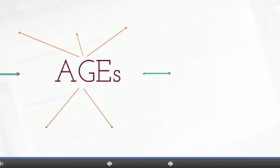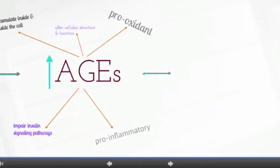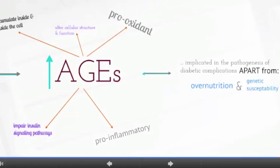Up to this point, accelerated AGE formation and accumulation in diabetes has been demonstrated to activate inflammatory and pro-oxidant mechanisms, impair cell signaling pathways, accumulate inside and outside the cell, and alter cellular structure and function, apart from overnutrition or genetic susceptibility.